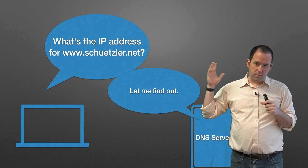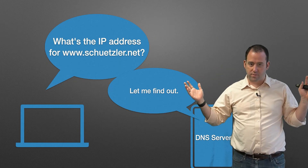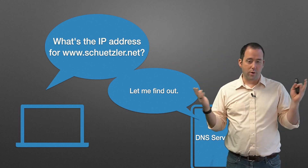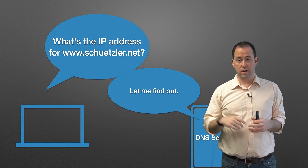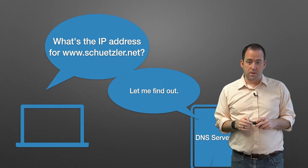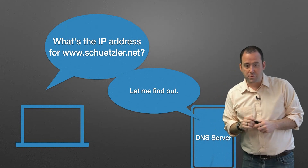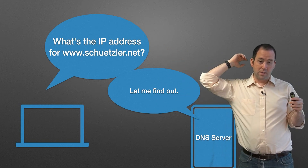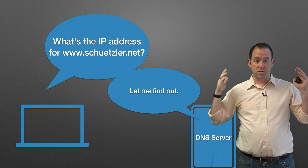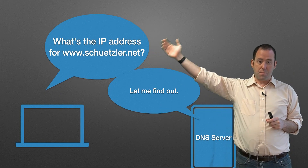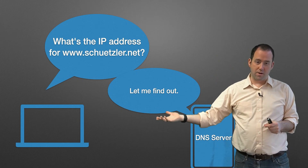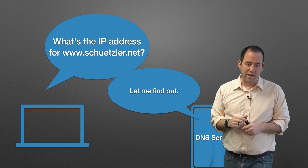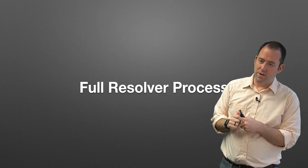We're talking about when your computer reaches out to whatever DNS server it's been told to reach out to, and asks what's the IP address for whatever domain name it wants. In our case, we're going to use the example of www.schetzler.net, my own website. And so what happens? Your computer reaches out to the DNS server and asks what's that IP address. The DNS server doesn't respond with 'let me find out' — it just goes and finds out and then responds.